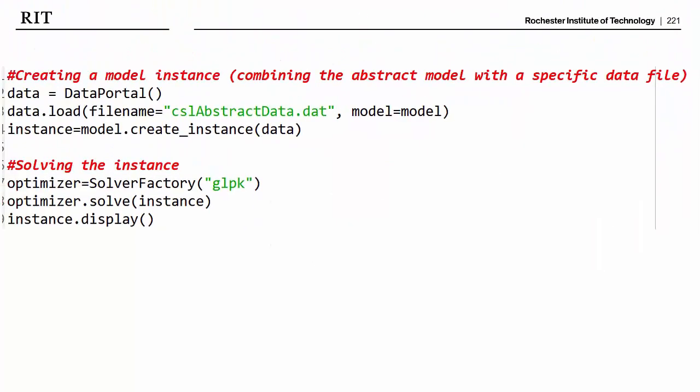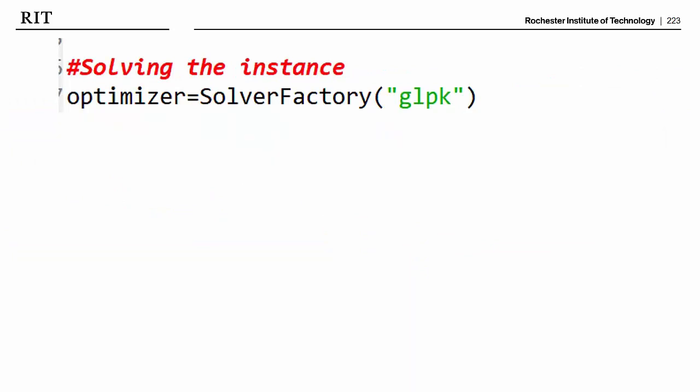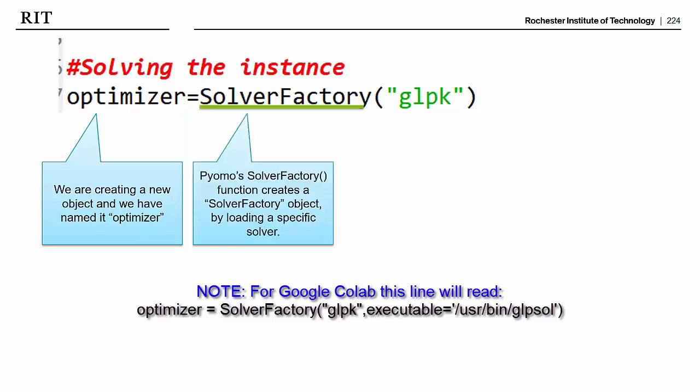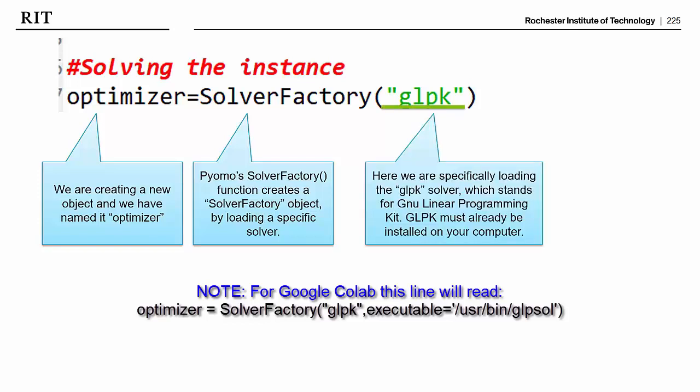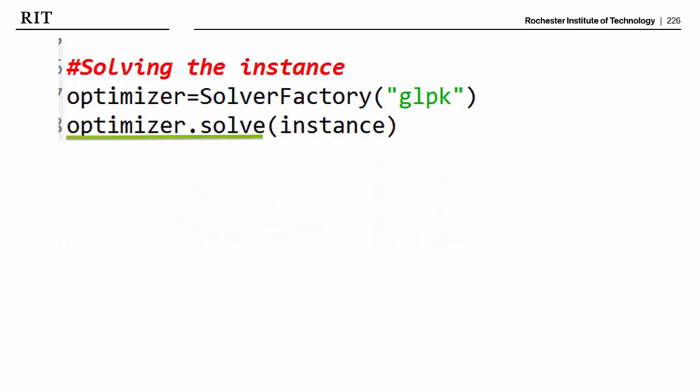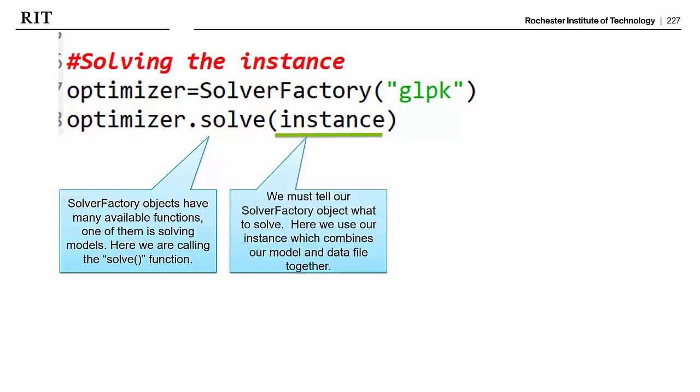So after adding that instance.pprint line, we can go to these last three lines in our model that solve our instance and display our results. So there they are nice and big. So we'll look at this first one first. This first line, optimizer, says we're creating a new object and let's name it optimizer. Pyomo's SolverFactory function creates a solver factory object by loading a specific solver. In this case, I'm asking it to load the GLPK solver. This GLPK solver is only going to work if you've already installed it on your computer. The second line is using the optimizer that we just created to solve our instance. In this case, what we want the optimizer to solve is the instance that we created a few lines ago.